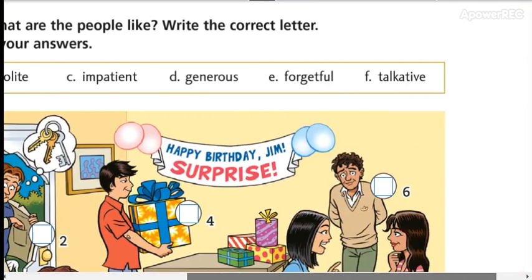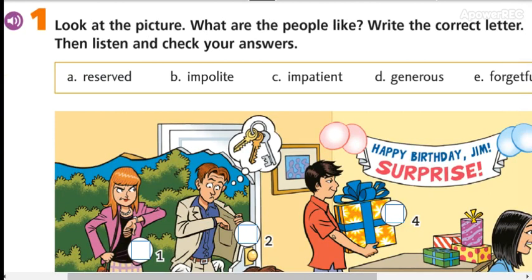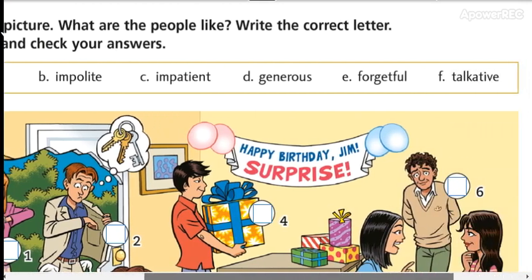We are going to check the meaning and the pronunciation. Letter A: reserved — reservado. Letter B: impolite — impolite means a person who is maleducada or descortés. Letter C: impatient — impatient means una persona que no tiene paciencia, impaciente.